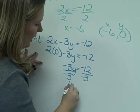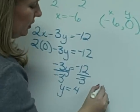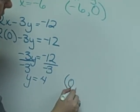So y equals positive 4, and the y-intercept would be 0 comma 4.